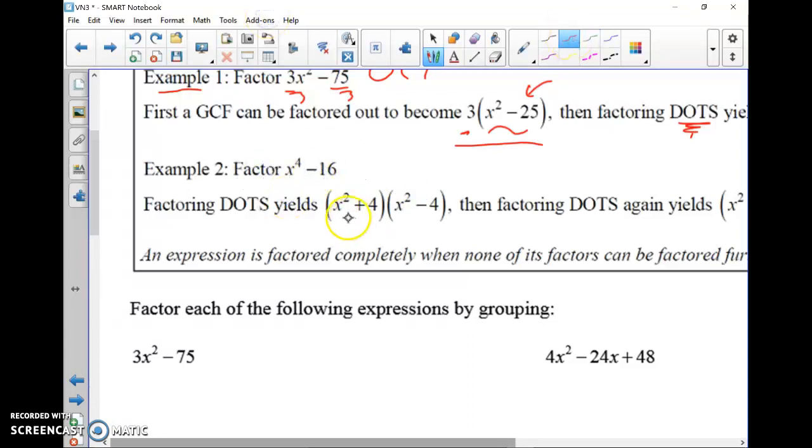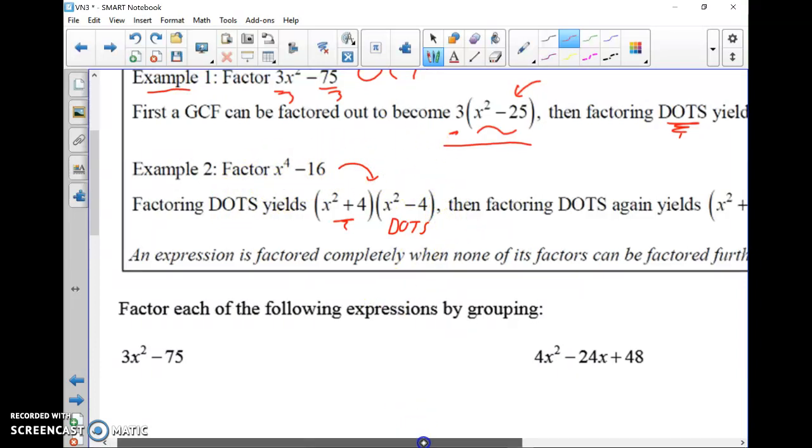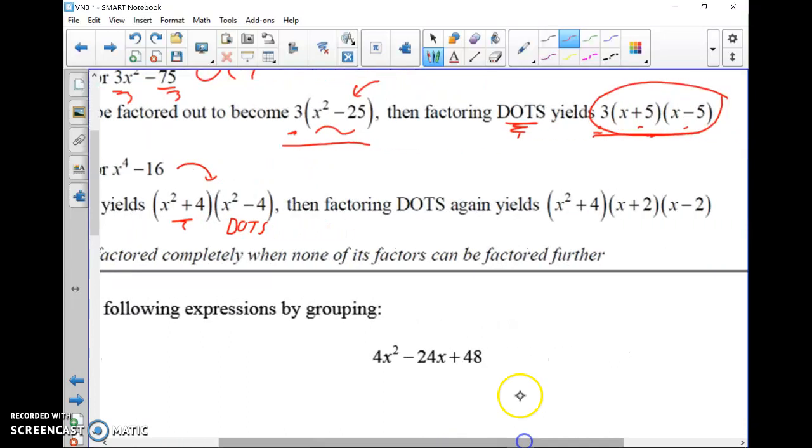x² + 4, that's nothing. There's no GCF. It's not a DOTS because of the plus sign. But the x² - 4, that is still a DOTS. So it was one round of DOTS factoring to get this. And then that x² + 4 doesn't factor. But the x² - 4 does. That's x + 2, x - 2.